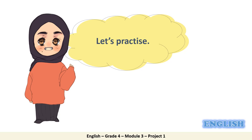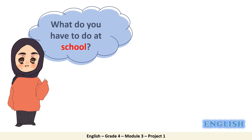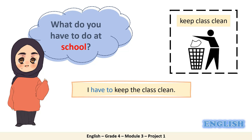Now, let's practice giving rules in school. Make sure grade 4 you read the question with me and answer according to the picture. What do you have to do at school? Look at the picture — keep class clean. I have to keep the class clean. And remember, it's everyone's responsibility in class to keep it clean. It's very important to keep the area around you as clean as possible, and if you do that, you will live in a clean place and a clean environment.